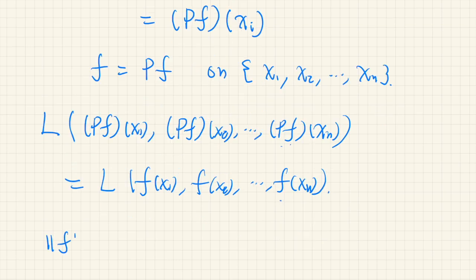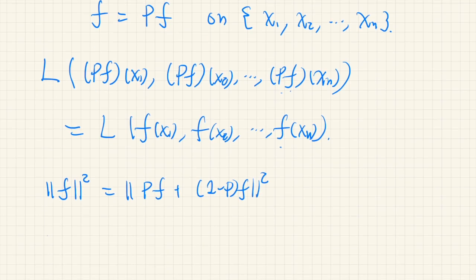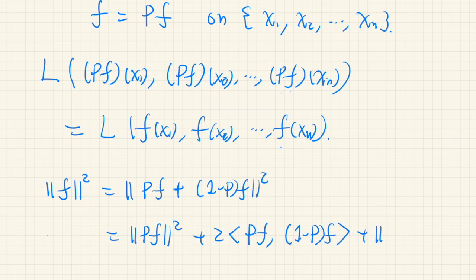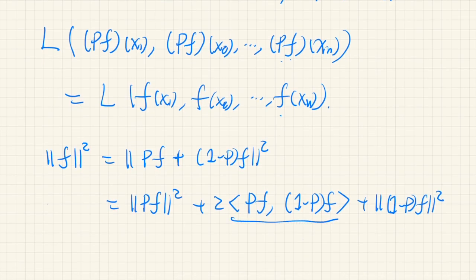On the other hand, if we calculate the norm squared of f, of course this norm is the norm of this Hilbert space, but we omit the subscript for simplicity. And if we use the orthogonal decomposition, this is Pf plus (1-P)f squared. And if we expand this, we have ||Pf||² plus 2 times the inner product of Pf and (1-P)f plus ||(1-P)f||². But this is, of course, 0 because Pf and (1-P)f, they are orthogonal.